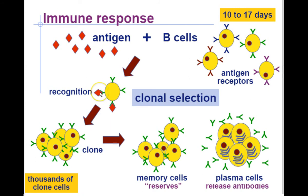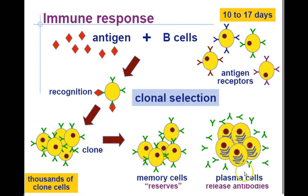Let's review step by step. Step one: a B cell specific to an antigen binds to it. Step two: thousands of clones of that B cell are made. Step three: those clones become either memory cells for future attacks, or plasma cells to make antibodies. You may want to sketch this out or pause and print a copy for your notes.